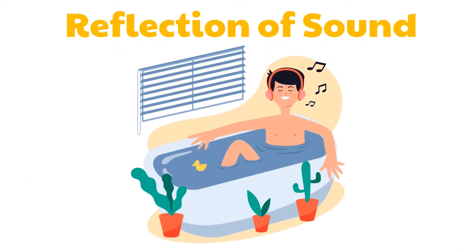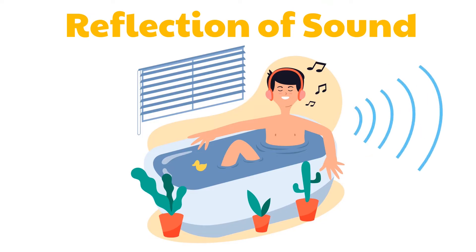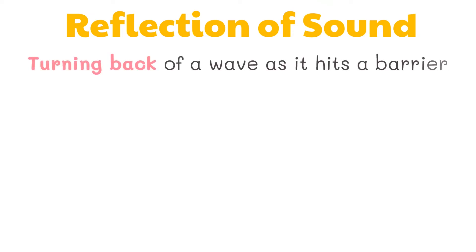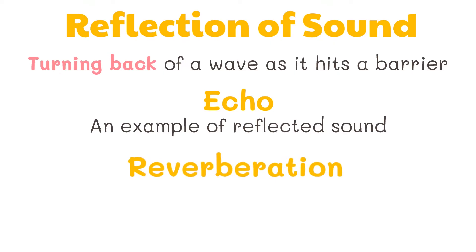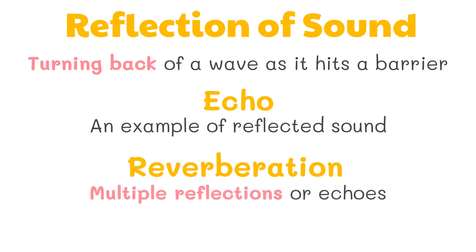A lot of people love to sing inside the bathroom because of privacy, and also because they feel that their voice sounds better. This is because the hard wall surfaces of the bathroom, which are usually made of wood or tile, bring about multiple reflections of sound. These hard walls and the small dimension of the bathroom typically create an aurally pleasing acoustic environment, with many echoes and reverberations contributing to the fullness and depth of voice. Reflection is described as the turning back of a wave as it hits a barrier. Echo is an example of reflected sound. Reverberation refers to the multiple reflections or echoes in a certain place.